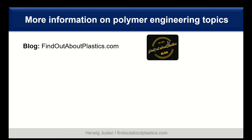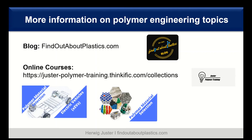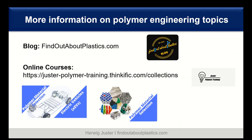If you want more information on polymer engineering and material selection topics, I highly recommend my blog findoutaboutplastics.com as well as my online training courses on material selection — I will link both in the description below. In my next video I discussed how to turn a commodity polypropylene into an engineering polypropylene which can replace a polyamide, so check it out. Thank you for watching, do not forget to subscribe and smash that like button. Till next time, bye.